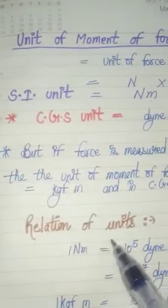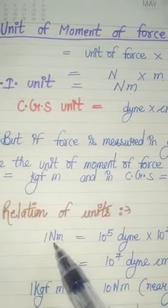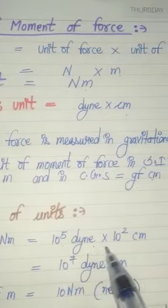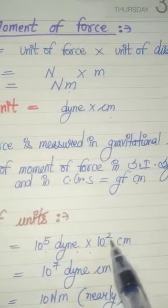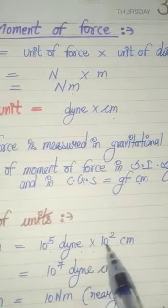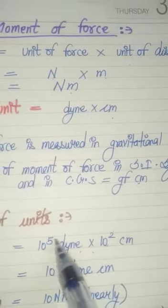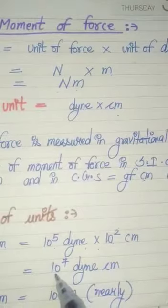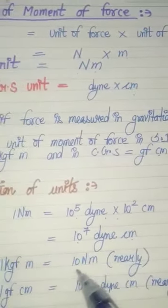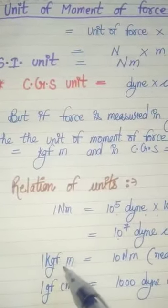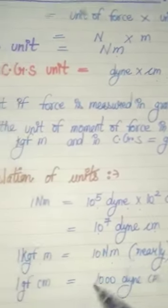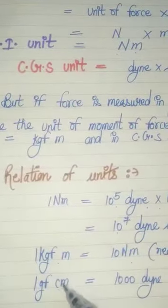The relation between these units: one Newton meter equals 10 to the power 5 dyne multiplied by 10 to the power 2 centimeter. Since the base is the same, the powers add: 5 plus 2 equals 7. So it equals 10 to the power 7 dyne centimeter. Also, 1 kilogram-force meter equals approximately 10 Newton meter.